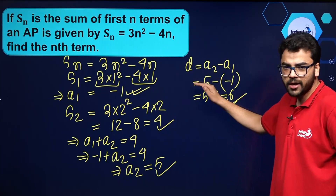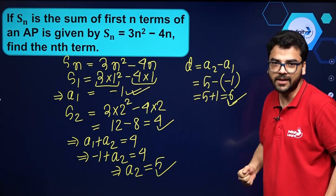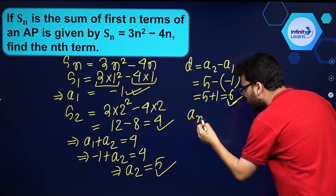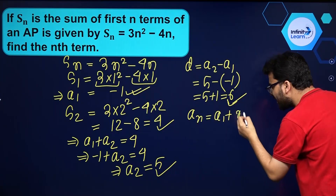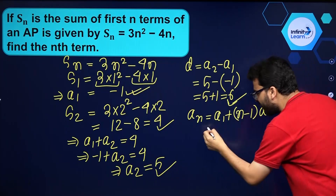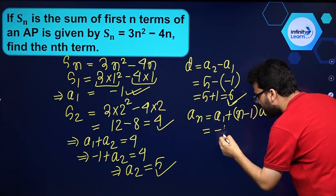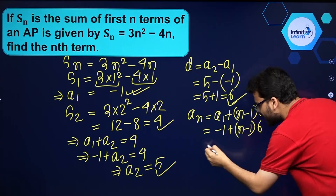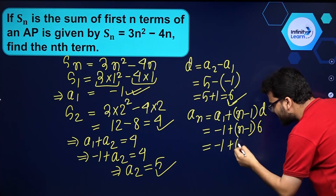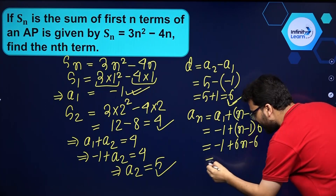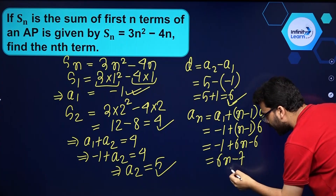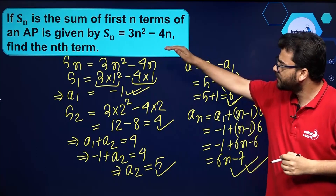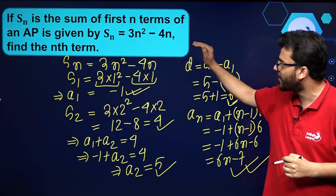Now we know the common difference and the first term of this AP. We can find the nth term using the formula: an equals a1 plus n minus 1 into d. So that is minus 1 plus n minus 1 into 6, which gives minus 1 plus 6n minus 6, simplifying to 6n minus 7. So the nth term of this AP is 6n minus 7, given that Sn equals 3n squared minus 4n.